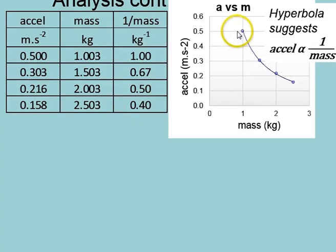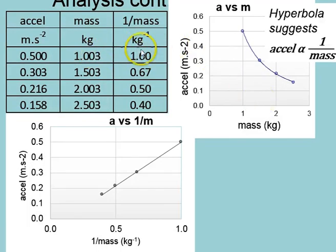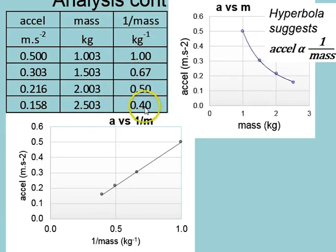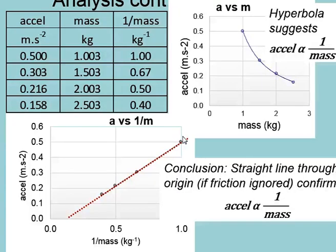Being a hyperbola, it suggests only that this axis is inversely proportional to this one. To make sure it is, we then plot a second graph — that's why we have the third column. We take these mass values and invert them. So 1 upon 1 is still 1, 1 upon 1.5 is 0.67, 1 upon 2 is 0.5, 1 upon 2.5 is 0.4. When we plot these graphs, we find they do line up in a straight line. Extrapolating back they still don't go through the origin because of the friction effect, but the straight line allows us to conclude that acceleration is inversely proportional to the mass.